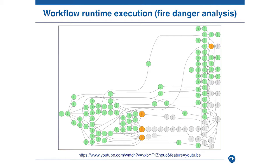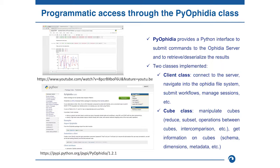As I said at the beginning, we provide also programmatic access through C APIs but also through the PyOphidia class. PyOphidia provides an alternative interface to the OPHIDIA server to retrieve and deserialize results. We implemented two classes: a Client class to connect to the server, navigate into the OPHIDIA system, and submit workflows; and a Cube class to manipulate cubes — reduce, subset, and operations between cubes — and to get information on cubes such as schema, dimensions, and metadata.